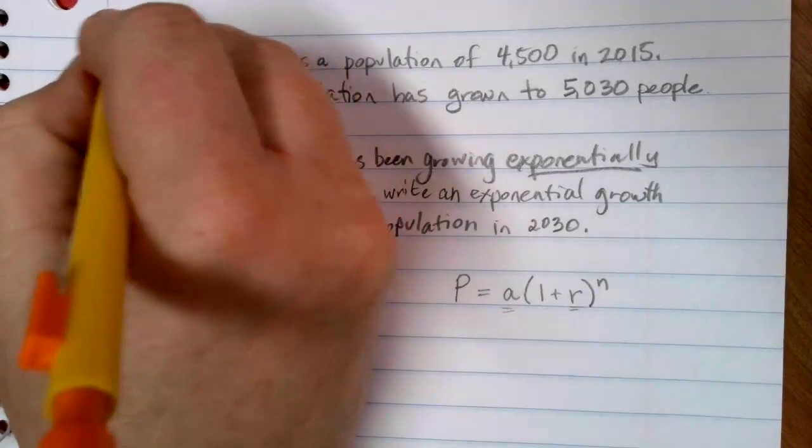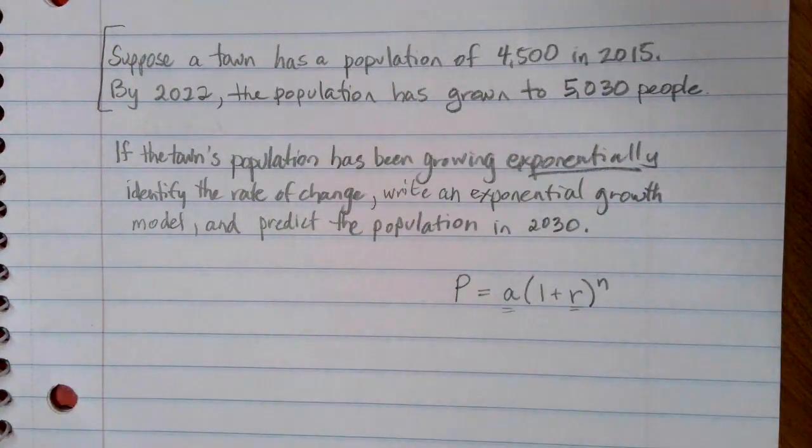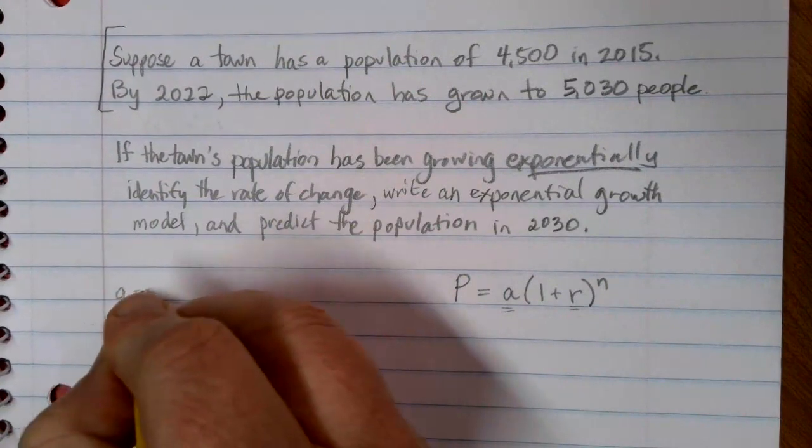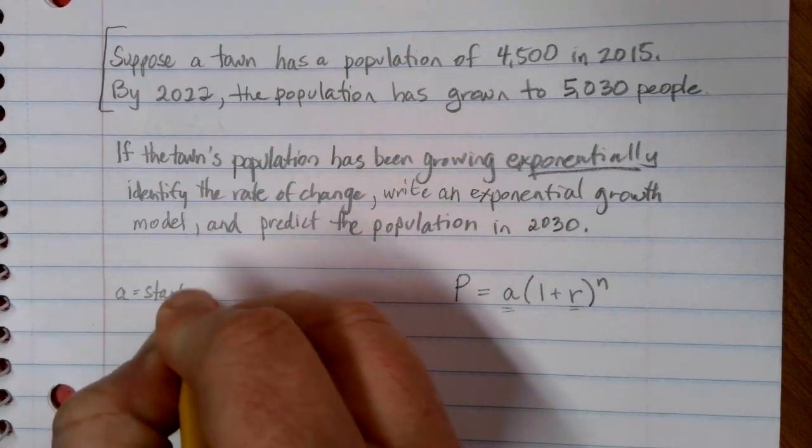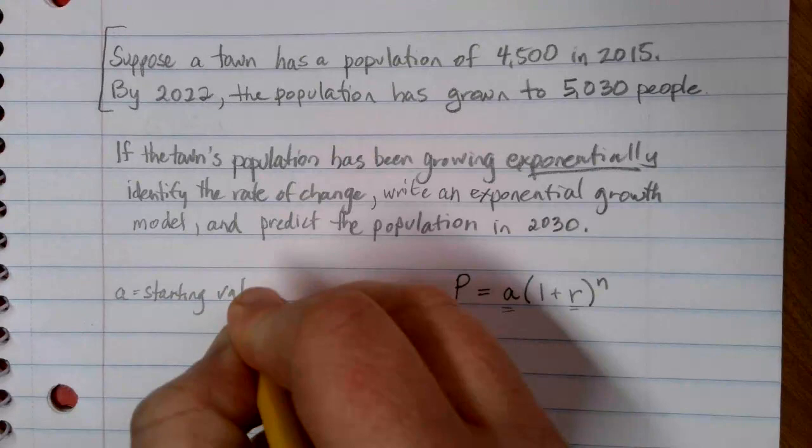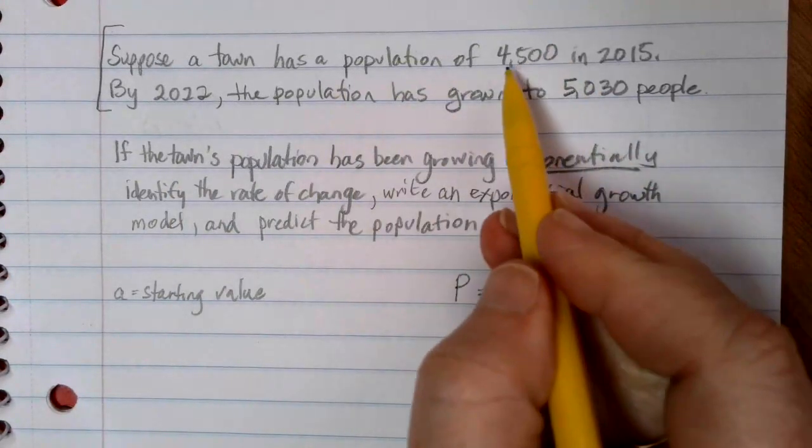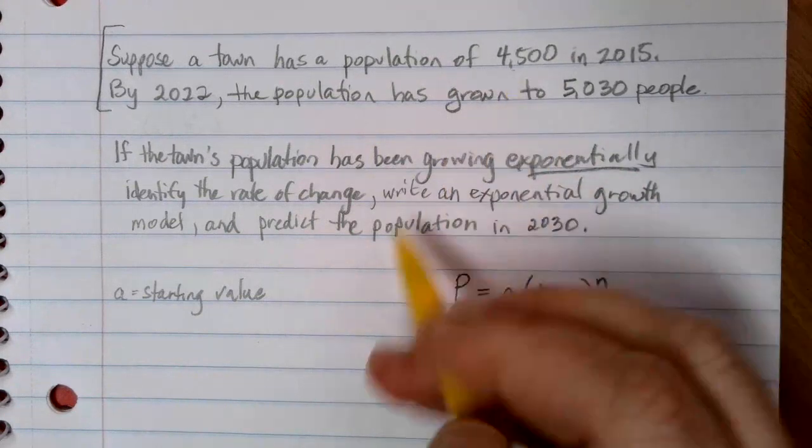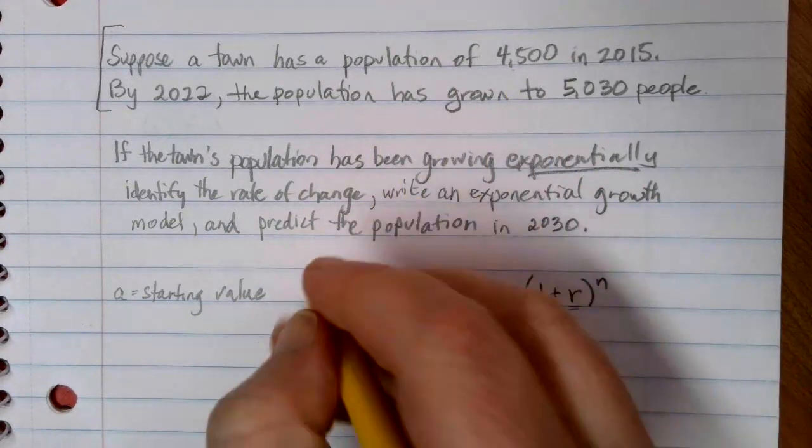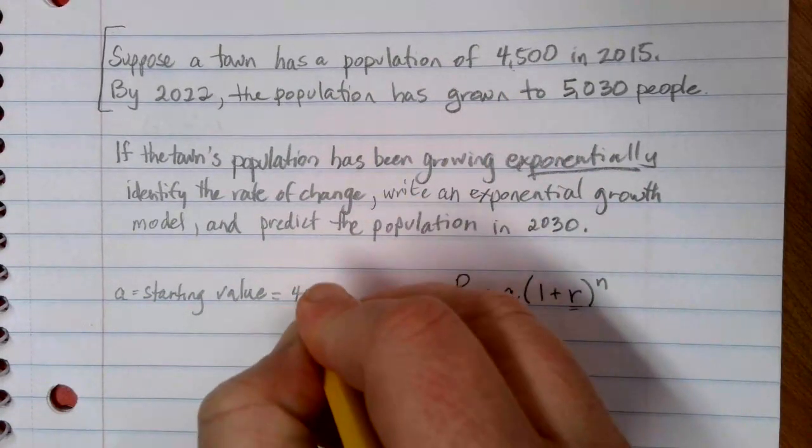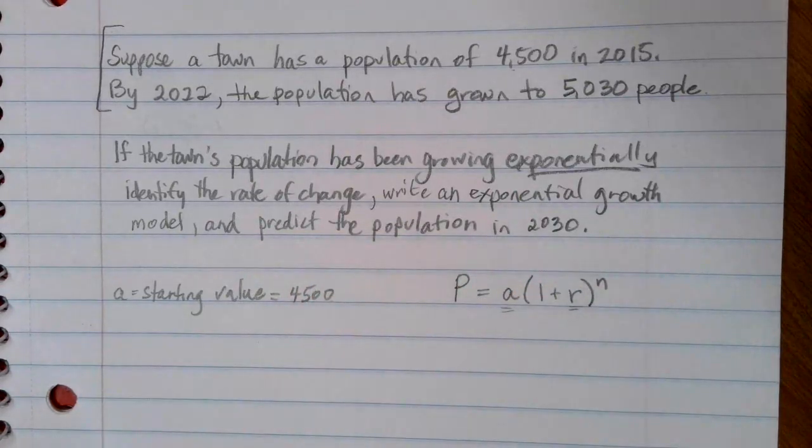If you look up here, I can identify the A value. Our A is our starting value. In this case, I have a couple of different numbers. This is the older value, so I think of that as my starting value. So I'm starting with 4,500 people in my town, and that's going to be my A value.